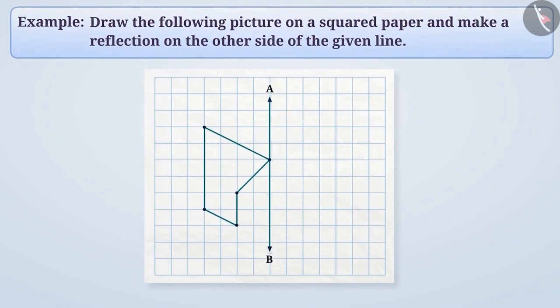For our convenience, let's name multiple points in the figure. Here, we see that T lies on the mirror line, so tell us where will its reflection be? Think a little.